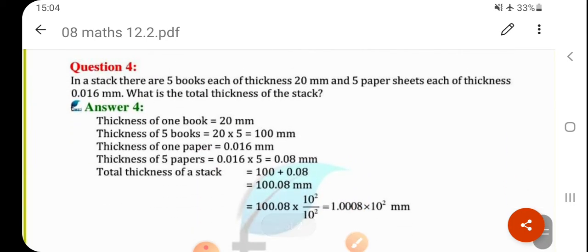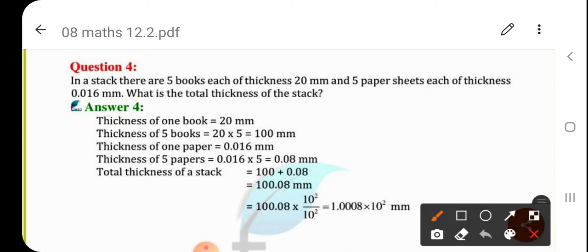Last question. In a stack, there are 5 books each of thickness 20 mm and 5 paper sheets each of thickness 0.016 mm. What is the total thickness of this stack? So, thickness of 1 book 20 mm. Total, how many books are there? 5. So, there are 5 books of 20 mm. So, thickness of 5 books that will be 20 into 5, it is 100 mm. And 5 paper sheets are there, that is of 0.016 mm. So, thickness of 5 paper: 0.016 into 5 is equal to 0.08. Now, both you have to add 100 plus 0.08, it is 100.08.